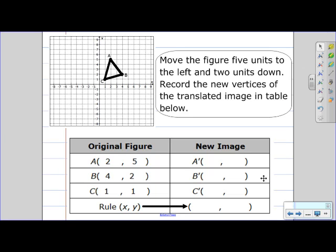Okay, so first we want to start by marking where we're going to move our figure. So we're moving our figure five units left, so we'll start with A as a reference point. So one, two, three, four, five.